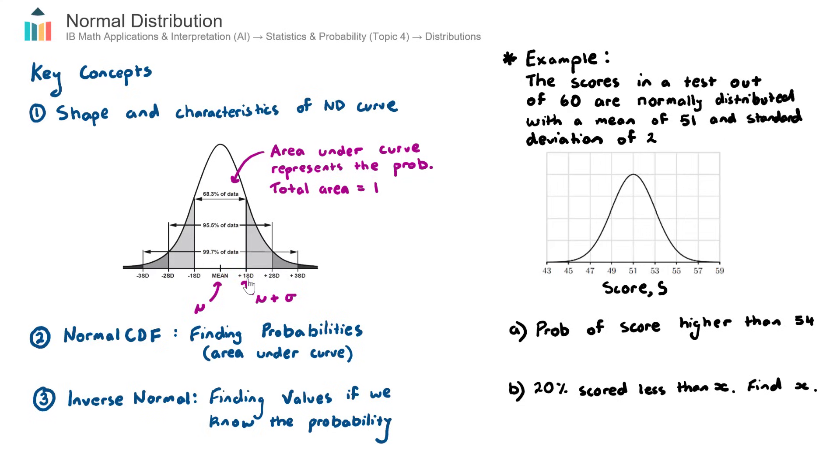So for example, this point here is known as one standard deviation above the mean. This next point here is two standard deviations above the mean. And you can probably get the point here for below the mean on the left-hand side as well. So this point way out here is three standard deviations below the mean.